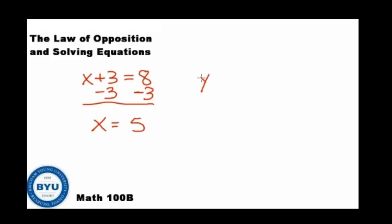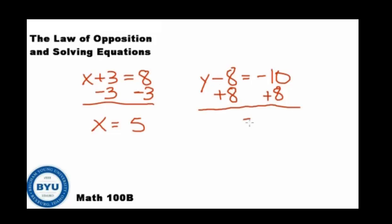We can do this with any type of problem. What if I had y minus 8 equals negative 10? We want to solve for y — get y by itself. Attached to it is a minus 8. To get y by itself, we're going to have to use the law of opposites. What is the opposite of minus 8? The law of opposites says to add 8 to both sides. Negative 8 and plus 8 cancel out, so on the left side we're just left with y. And here we have negative 10 plus 8, which is negative 2. These are simple questions to start, but if we understand the law of opposition, we're going to be able to do any type of advanced problem as well.